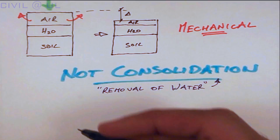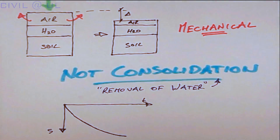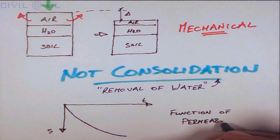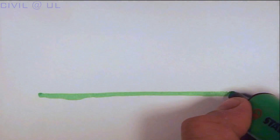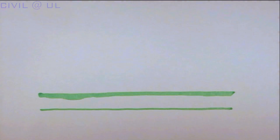As we saw earlier, consolidation is a time-dependent process controlled by the permeability of the soil. There are many techniques for compacting soil. Here are some of the more common methods.